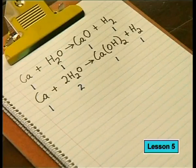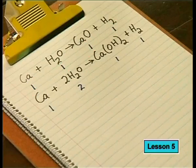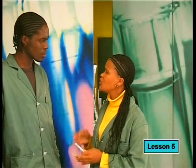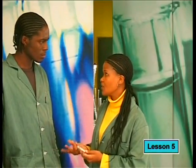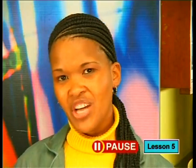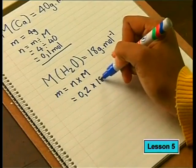Looking at the equations: in the calcium oxide equation, 1 mole of calcium reacts with 1 mole of water to form 1 mole of calcium oxide and 1 mole of hydrogen. But in the calcium hydroxide equation, 1 mole of calcium reacts with 2 moles of water to form 1 mole of each product. To make sure we have enough water for both possible reactions, we need twice as many moles of water as moles of calcium — so we need at least 0.2 moles of water.